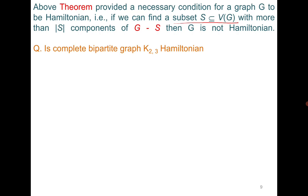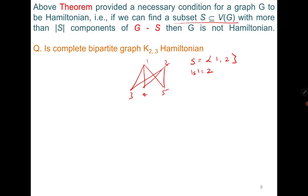Let us see a simple example: the complete bipartite graph K2,3 is not Hamiltonian. Draw K2,3 with vertices 1, 2, 3, 4, 5. I take S = {1, 2}, whose cardinality is 2. If I delete set S, then G minus S consists of 3 isolated vertices, meaning G minus S has 3 components, which is greater than the cardinality of set S. Therefore, from the above result, this graph is not Hamiltonian.